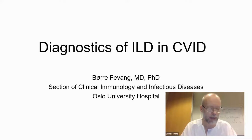The diagnostic procedures of ILD in CVID are based on the definition and diagnostic criteria of ILDs/GLILD. GLILD is described as a distinct clinical radio-pathological interstitial lung disease, characterized by clinical, radiological, and histopathological findings. Clinical features include dyspnea and chronic cough, reduced pulmonary function tests — forced vital capacity (FVC) and diffusion capacity of carbon monoxide (DLCO) — and importantly, exclusion of underlying infections. Patients may present with all or some of these manifestations.